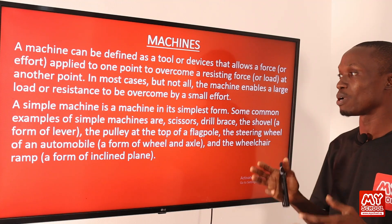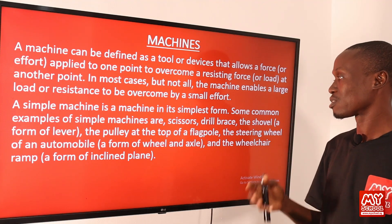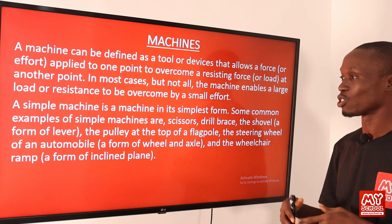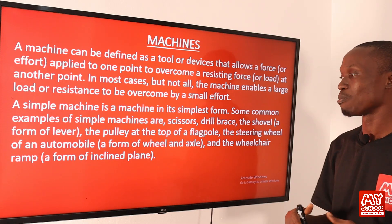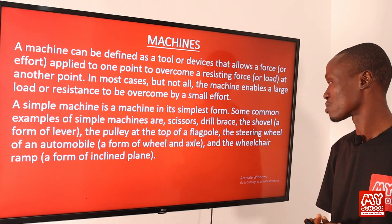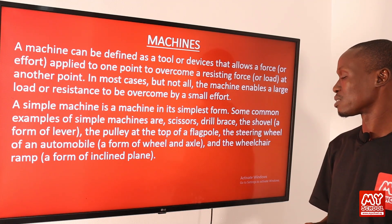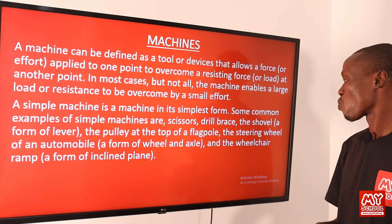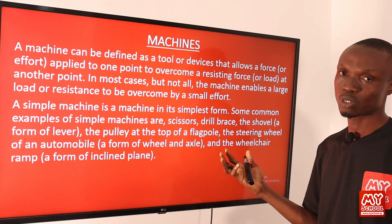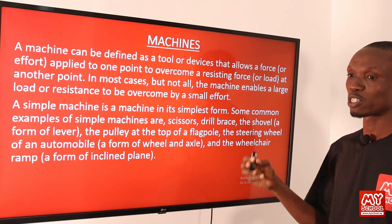Some examples of common machines are scissors, a drill brace, the shovel, the pulley at the top of a flag post, the steering wheel of an automobile, and the wheelchair ramp. Those are some examples of simple machines.